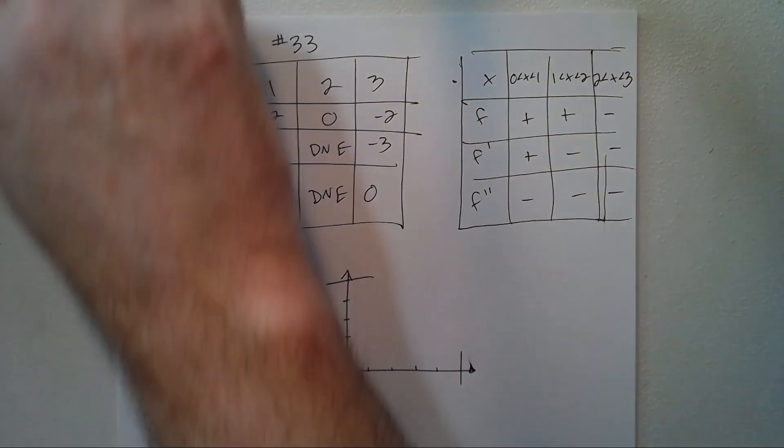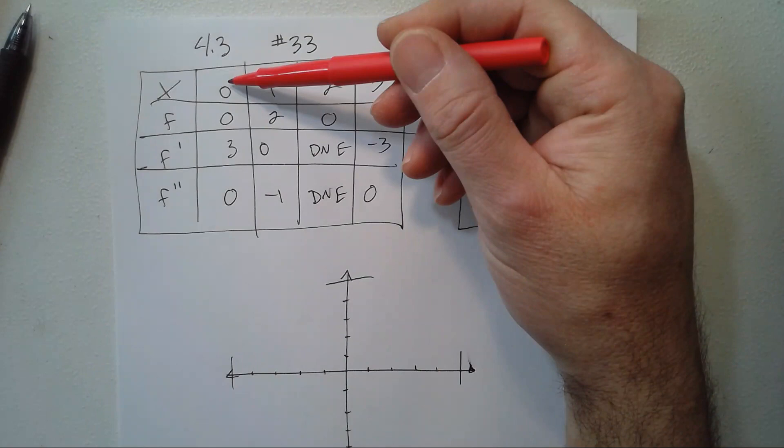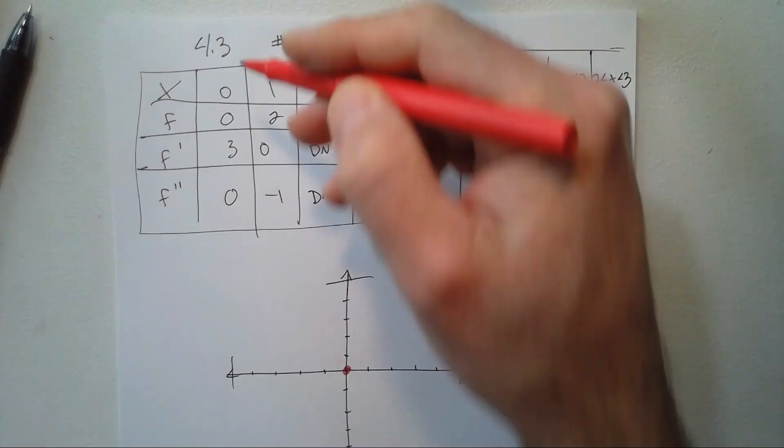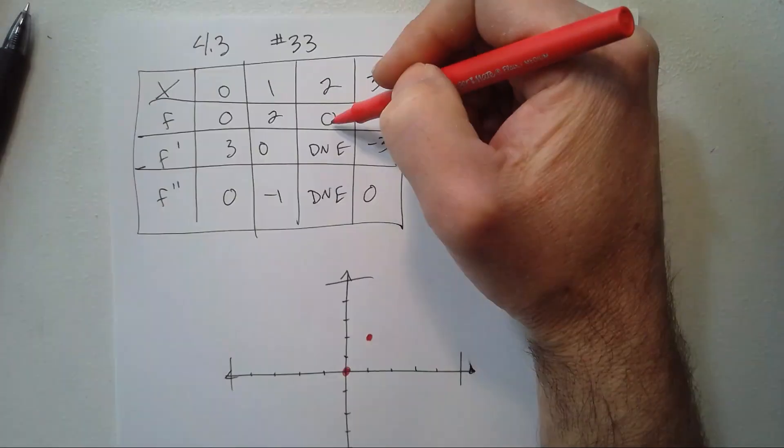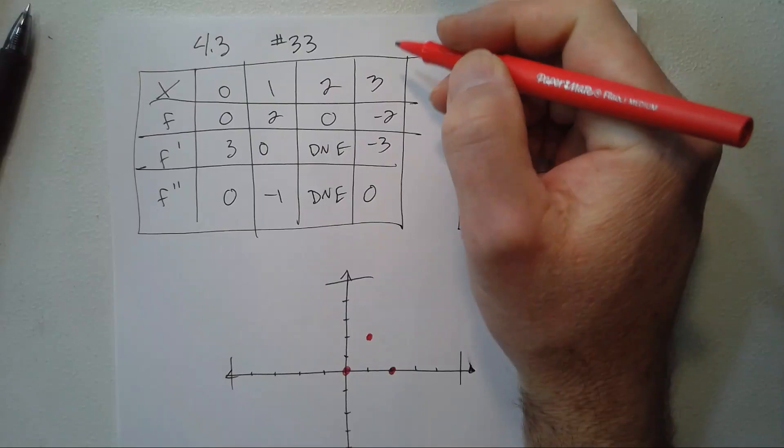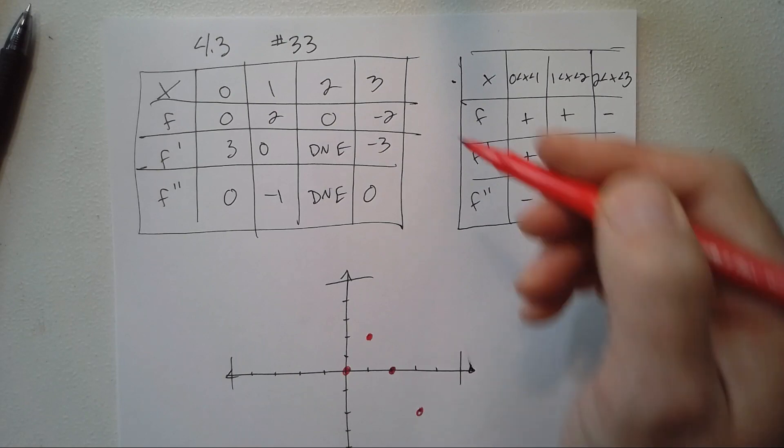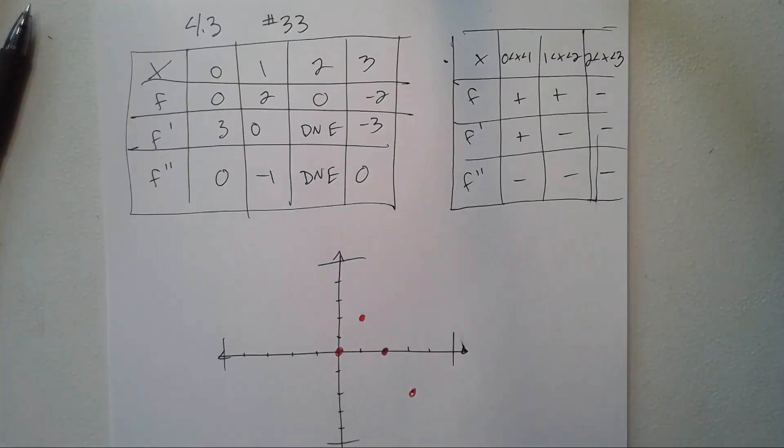First thing it says: when x is 0, F is 0. When x is 1, F is 2. When x is 2, F is 0. When x is 3, F is negative 2. Okay, we know that's the case, so now we've got four points on the graph.